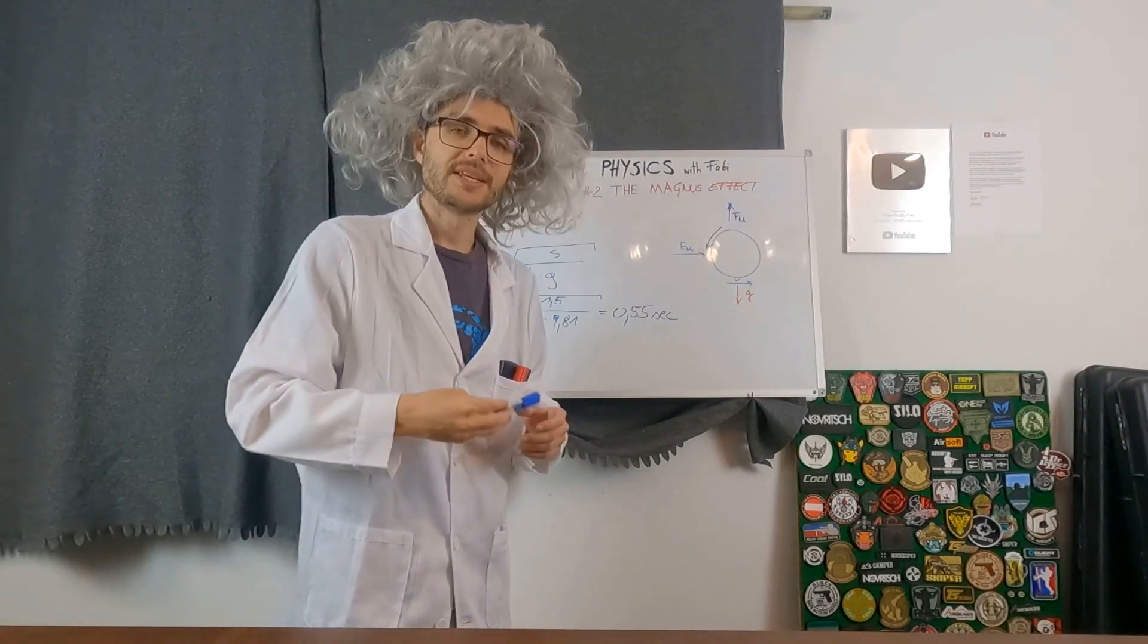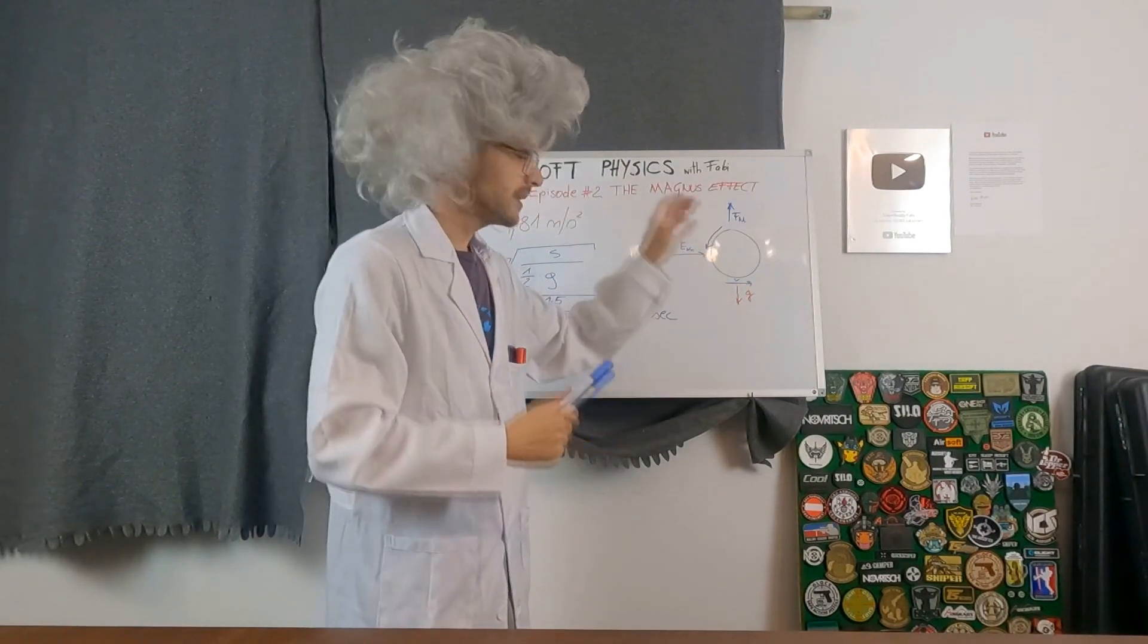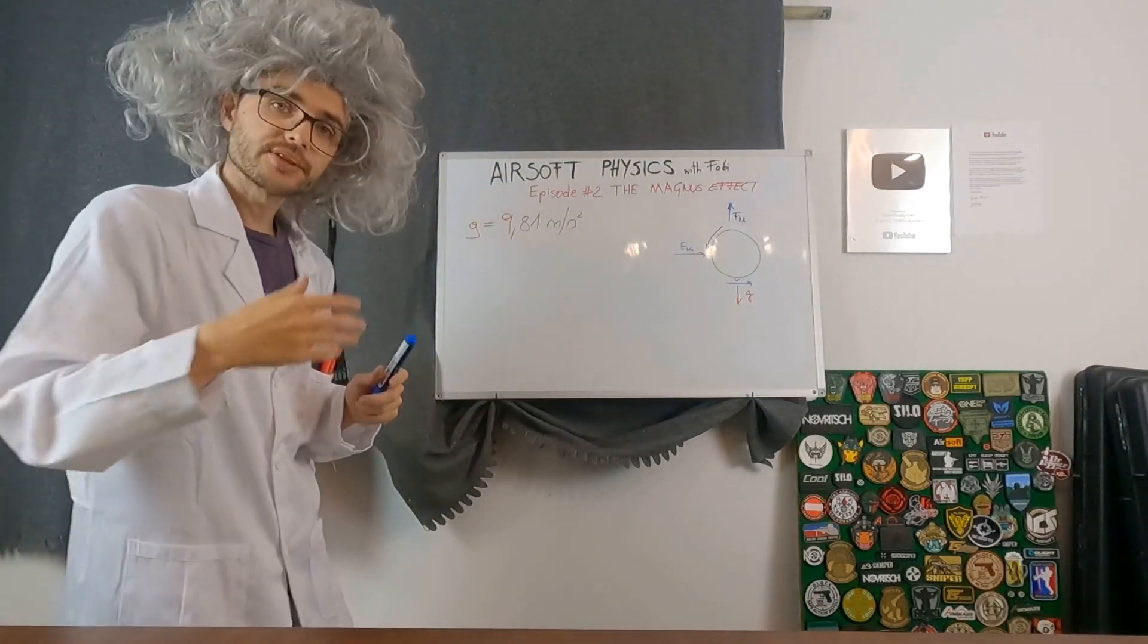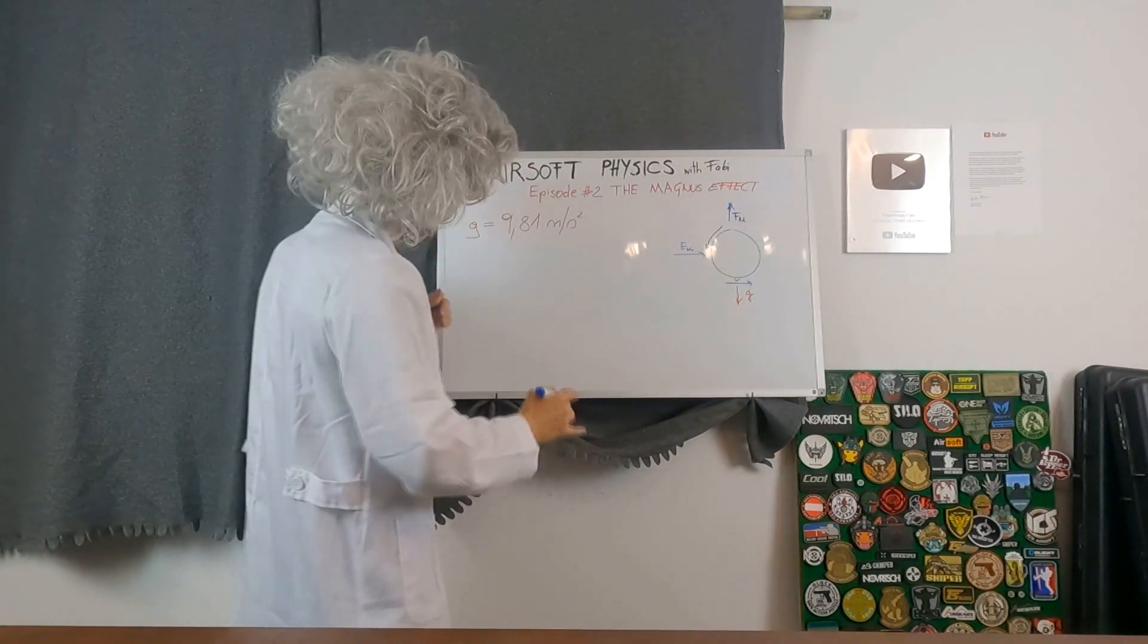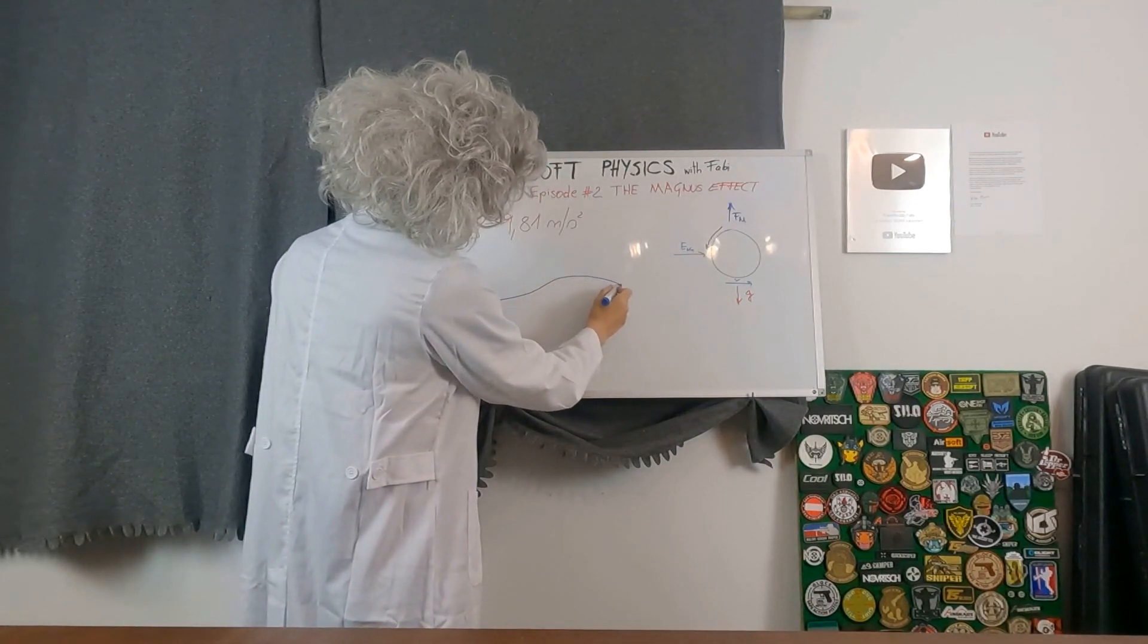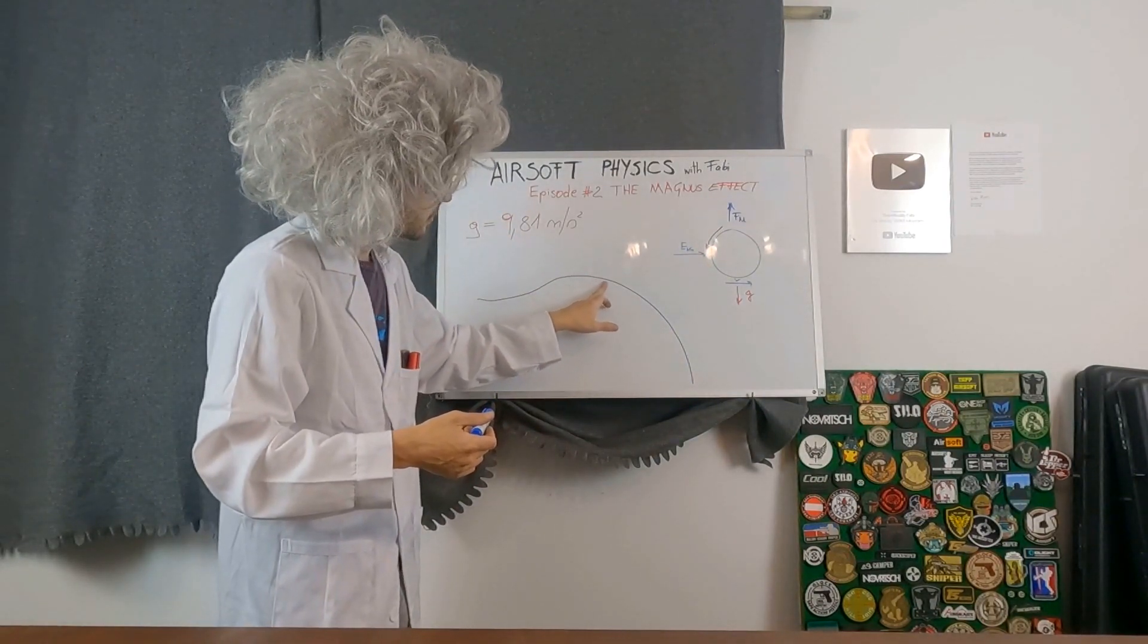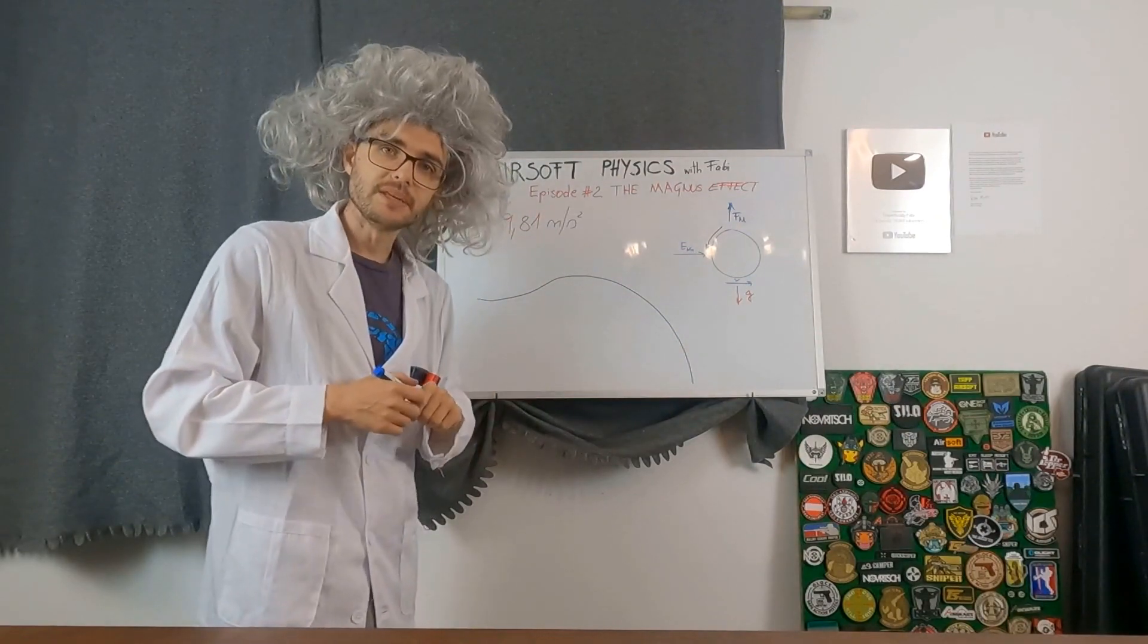Now that we know how the Magnus force is generated, there is another thing you need to think about. And this is the spin will decay over the travel. What this means in general is we are applying a lot of spin at the start of our shot. The curve of the BB will look something like this. It will go up until it drops to the ground because the ball is spinning slower and slower until the g force gets bigger than the Magnus force and pulls the BB down.